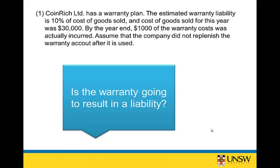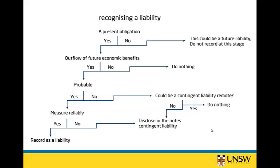So is the warranty going to result in a liability? Is there a present obligation? Yes — by offering customers the ability to return under a warranty, it is the result of a past event, and customers can return under the warranty policy. Would it result in an outflow of economic benefits? Yes. If a customer has faulty goods, they can come to Coin Rich and receive a cash refund, so future economic benefits will flow from the entity.